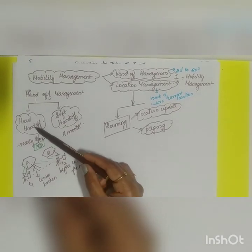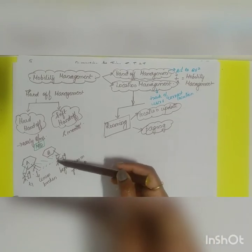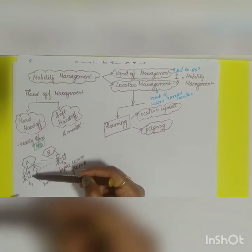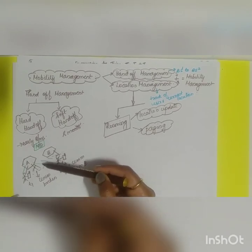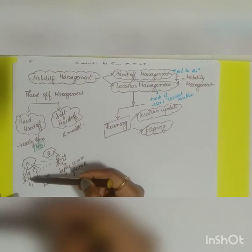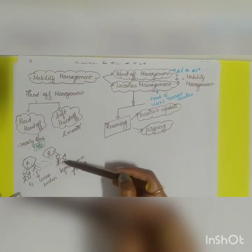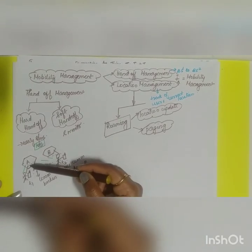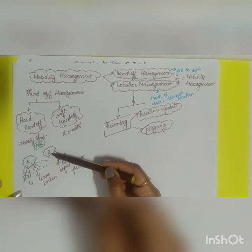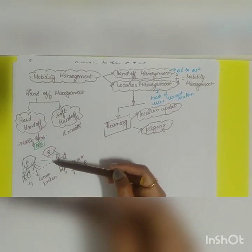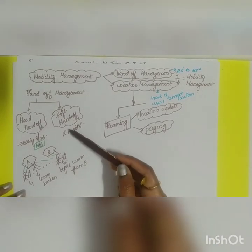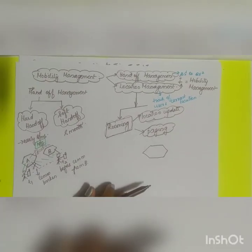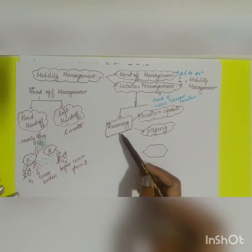In a soft handoff, as the mobile station moves from one cell area to another, it communicates with both base station 1 and base station 2 simultaneously. The mobile switching center manages this transition so that, as the connection drops from the old base station, it is already established with the new one. This ensures no call drop occurs when moving between locations — this is called soft handoff.